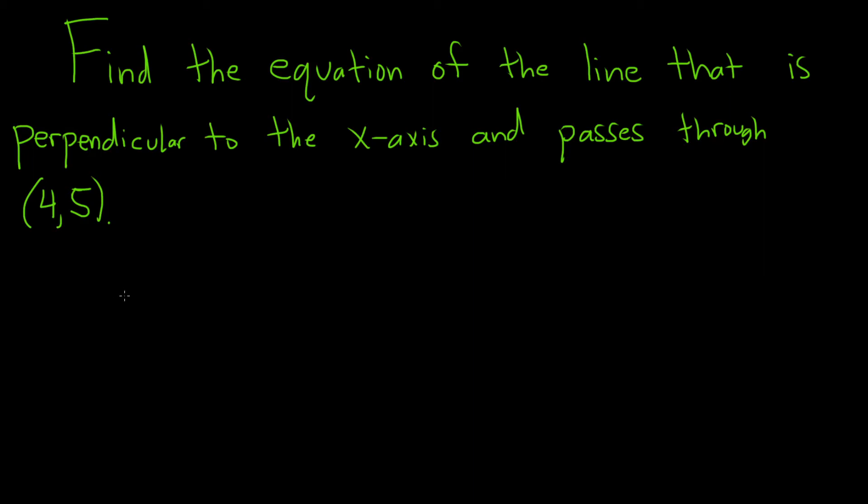Find the equation of the line that is perpendicular to the x-axis and passes through the point (4,5). Solution: So the thing in this problem is that they tell you it's perpendicular to the x-axis.